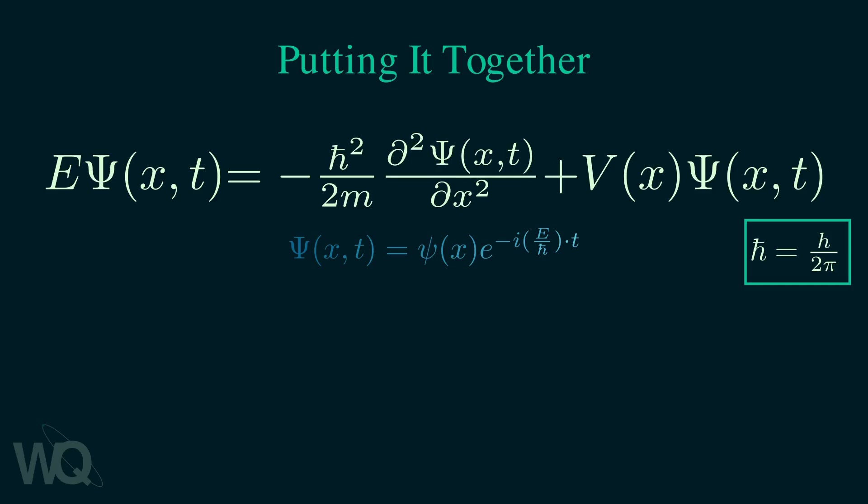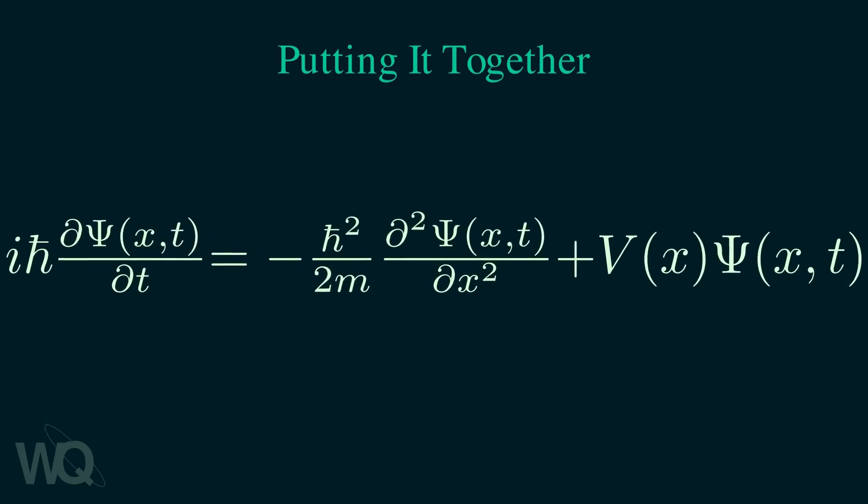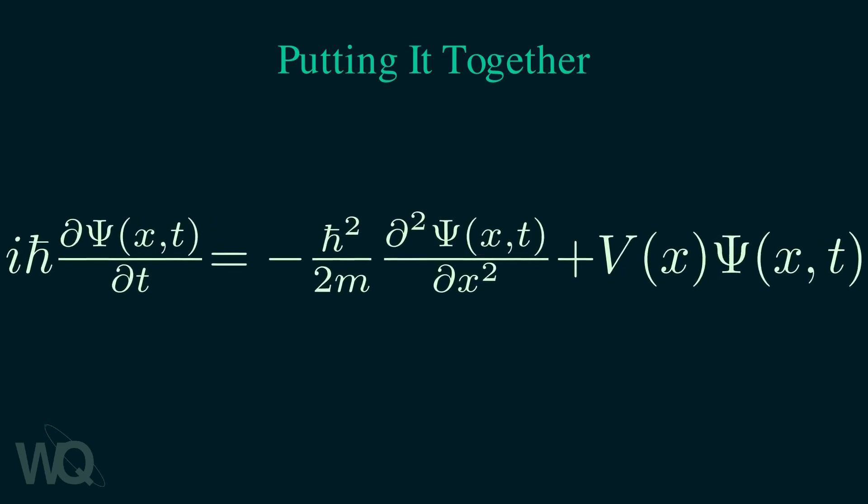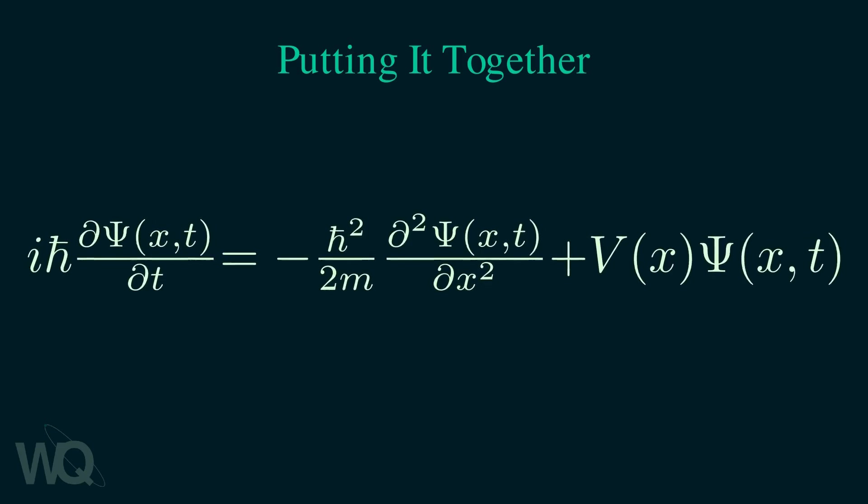To get the time-dependent equation, all we have to notice is that the left side of the equation can be written in terms of the time derivative. In particular, we have this relation. Substituting this, we get the full time-dependent Schrödinger equation. And this is the original derivation of the Schrödinger equation. This is how Schrödinger himself derived his famous equation.